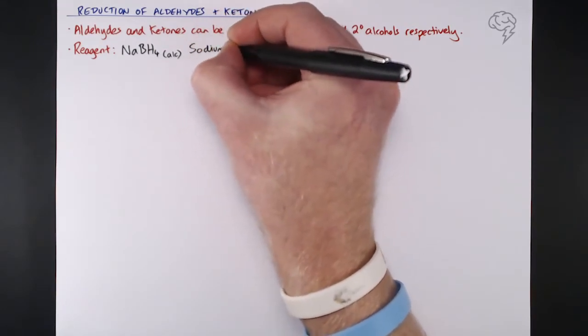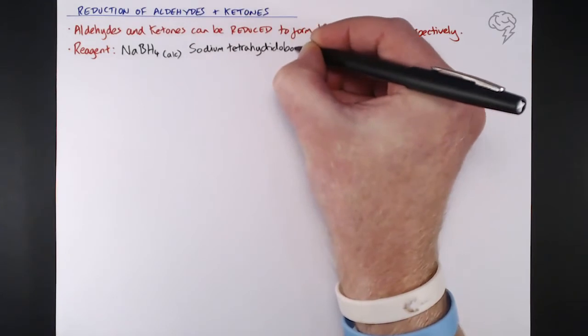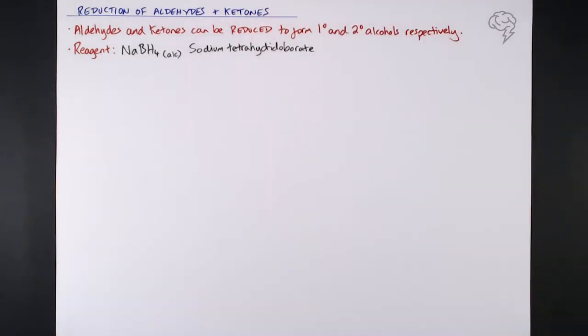The full name of this molecule is sodium tetrahydridoborate. Don't worry about remembering it - if you're asked what the reagent is in the exam, you write NaBH4, job done. You don't need to write the full name when the formula will do, because you are doing chemistry after all.